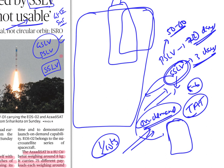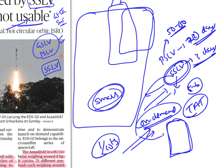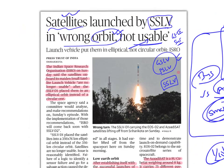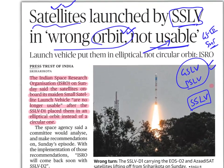The disadvantage of SSLV is that it can carry only smaller loads, not bigger ones. But today, most satellites being sent to space are small in size. When you are only four people, it's better to take an auto rather than a bus. Similarly, SSLV saves time and cost. That is the objective and logic of SSLV.